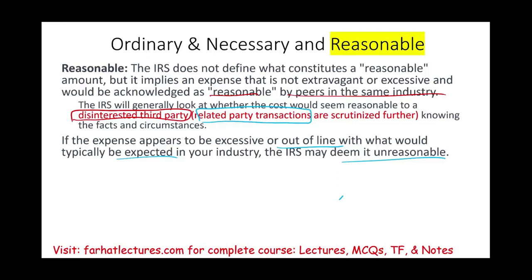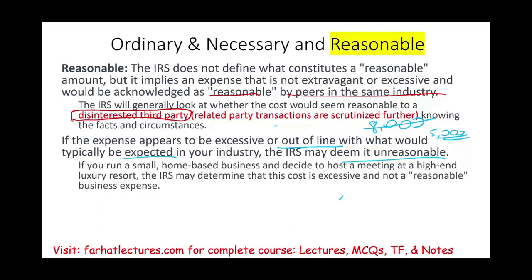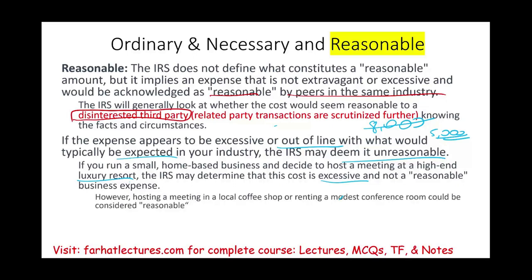If it's deemed unreasonable, for example, let's assume you're paying rent of $8,000 per month but the fair market value should be $5,000 — and the most expensive office rental in your area is $5,000 — the IRS would say you cannot take the $8,000 deduction; you have to use $5,000. Another example: if you own a small home-based business and decide to host a meeting at a high-end luxury resort, the IRS might determine that the cost is excessive and not a reasonable business expense. If you hosted the meeting at a local coffee shop or a modest conference room, it would be considered reasonable.